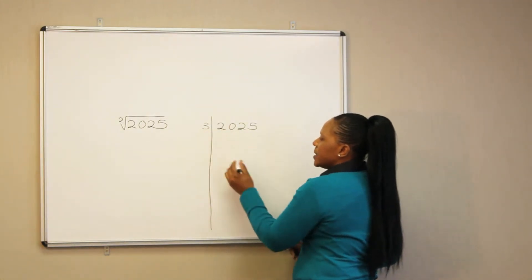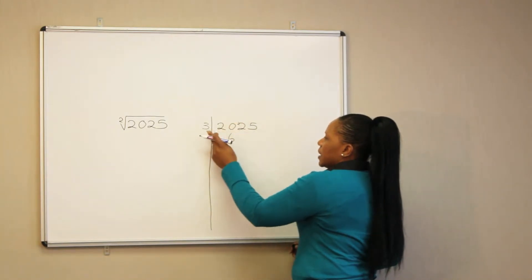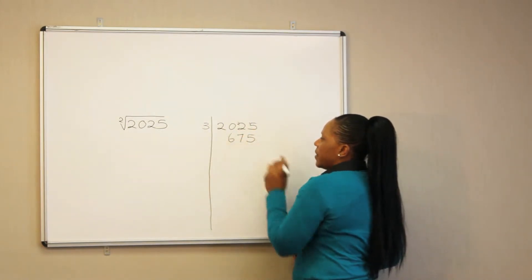So 3 into 20, it goes in 6 times, remainder 2. 3 into 22, it goes in 7 times, remainder 1. 3 into 15, it goes in 5 times.